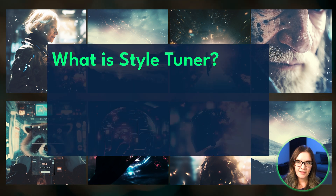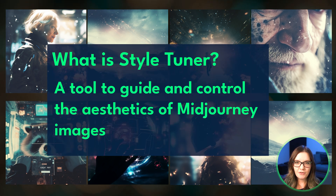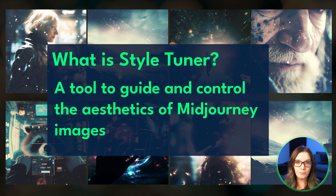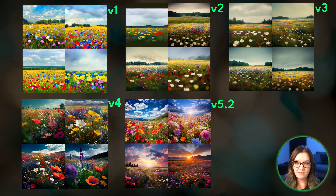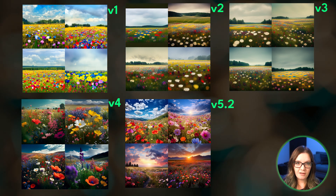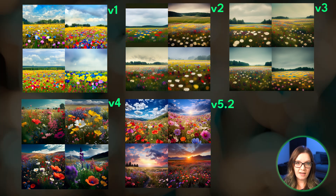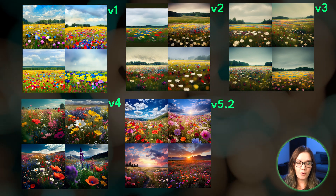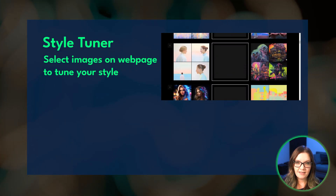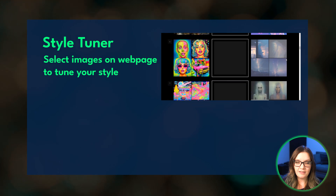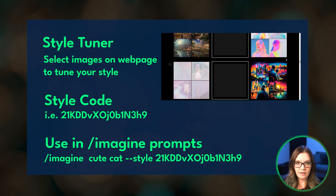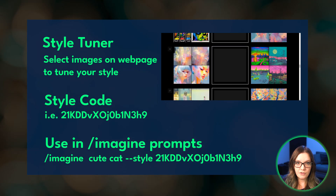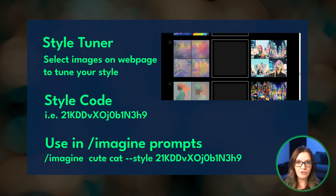So what is Style Tuner? The Style Tuner is a tool that allows you to guide and control the aesthetics of Midjourney. Each Midjourney release uses a default style aesthetic, and that default aesthetic interacts with both the text and images that we use in our prompts. By using a Style Tuner we create what is called a style code, which we can then use in our prompts to override the default Midjourney aesthetics.